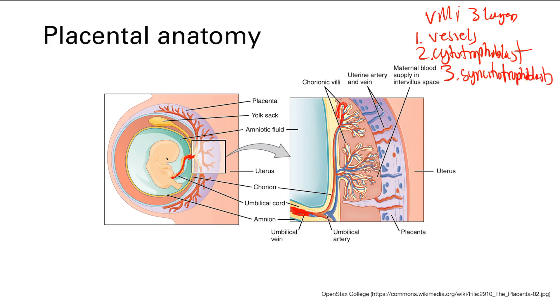And these cytotrophoblasts function to secrete some hormones. They make HCG and they make human placental lactogen. We're going to talk about that in the next lecture. I think this is pretty much the level of detail you need to know for step one.